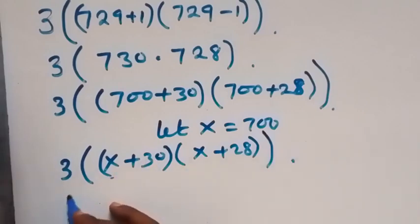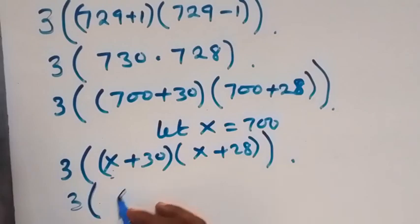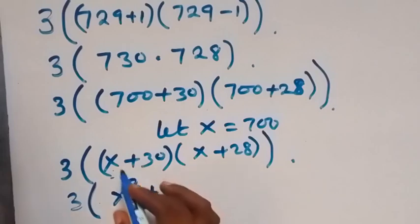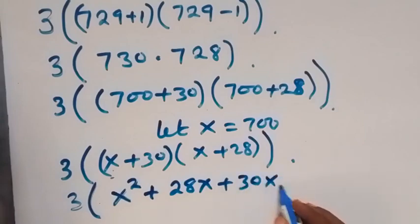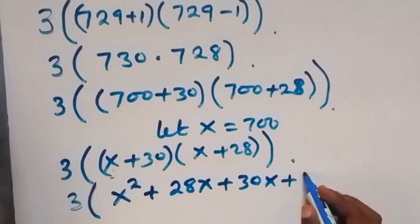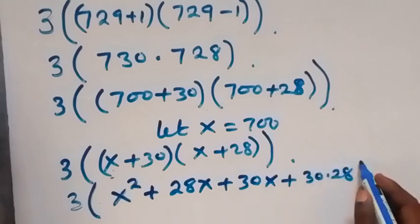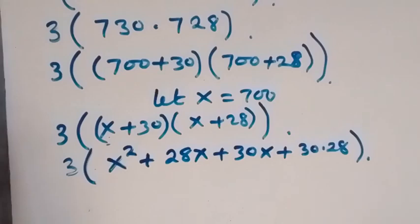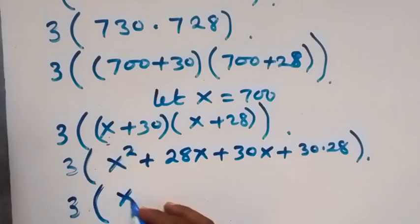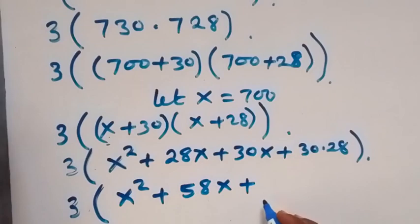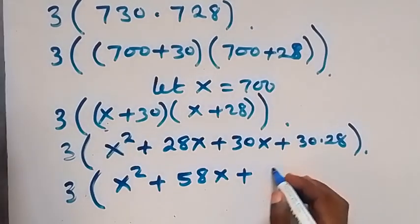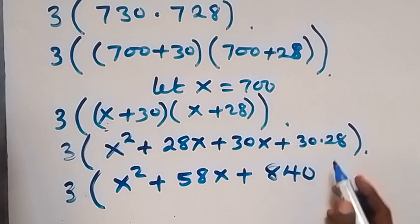So when we expand this now, we have 3 into bracket x times x, which gives us x squared, then plus x times 28, which gives us 28x, then plus 30 times x, which gives us 30x, then plus 30 times 28. When we collect terms, this gives us 3 into bracket x squared plus 58x, then plus 30 times 28, which gives us 840.